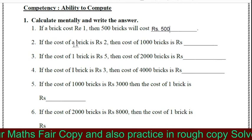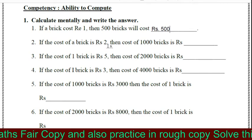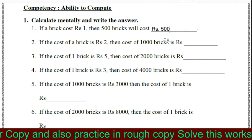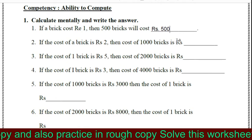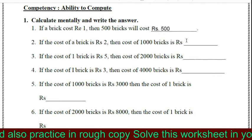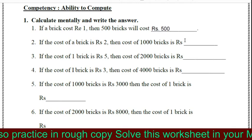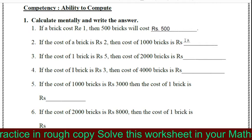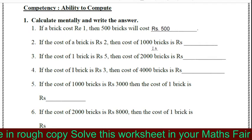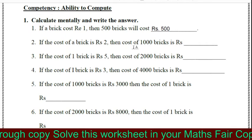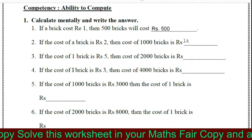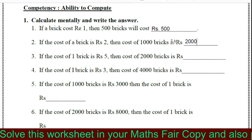The next question is: if the cost of a brick is rupees 2, then the cost of 1,000 bricks is rupees? 1 brick costs rupees 2, so the cost of 1,000 bricks will be 1,000 twos — that is 2,000. So the answer will be 2,000 rupees.